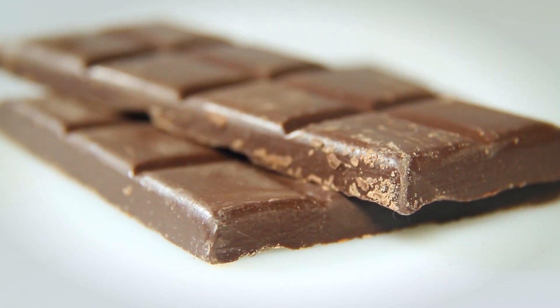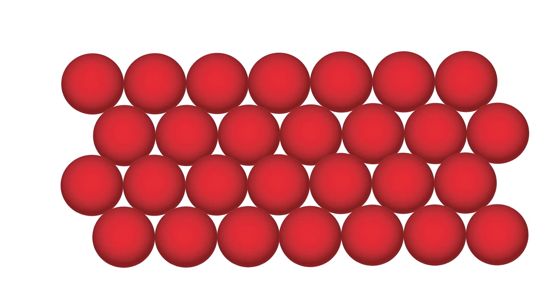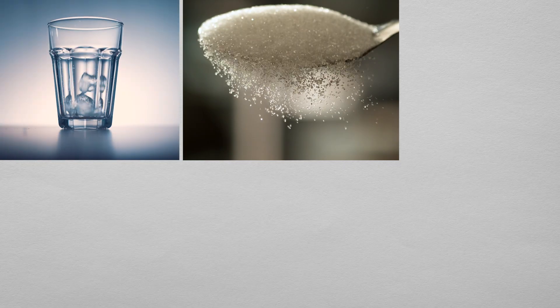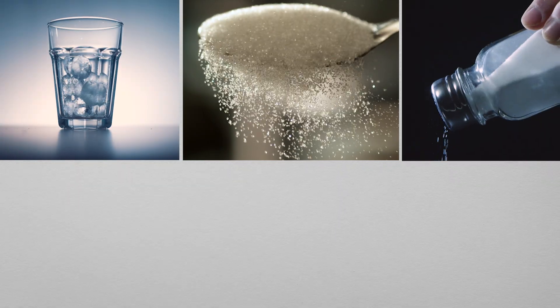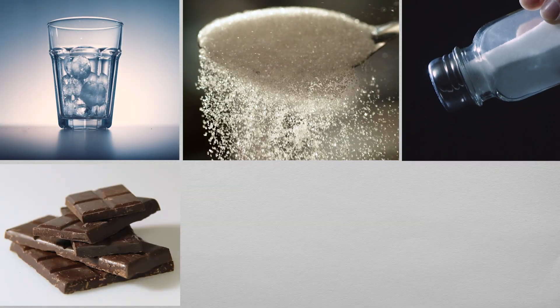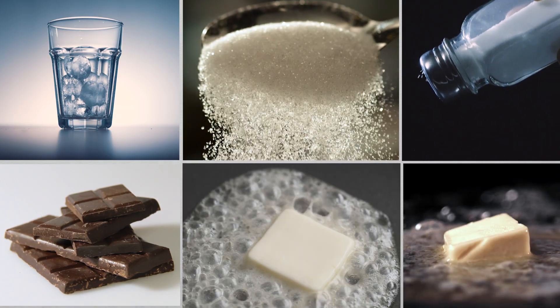Crystalline solids, or crystals, have molecules, atoms, or ions packed together in an orderly pattern and appear to have flat surfaces. The crystalline solids we eat are ice, sugar, salt, and chocolate, and believe it or not, butter and margarine are all made of crystals.